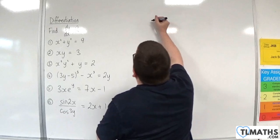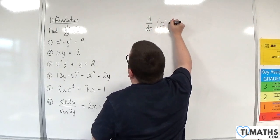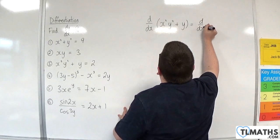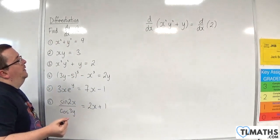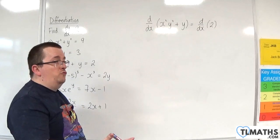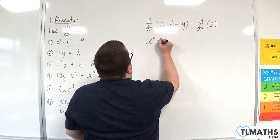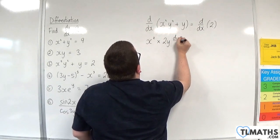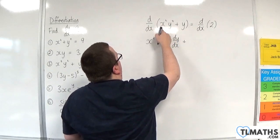Number 3: d by dx of x squared y squared plus y is equal to d by dx of 2. For the first term, x squared times y squared, I need to use the product rule. That gives the first times the derivative of the second, which is 2y dy by dx, plus the second times the derivative of the first.